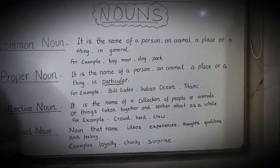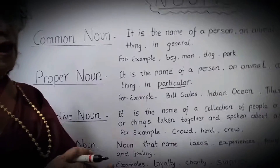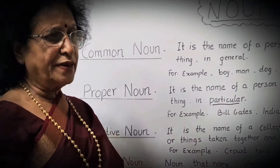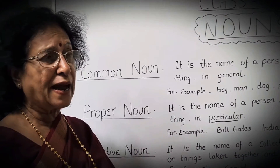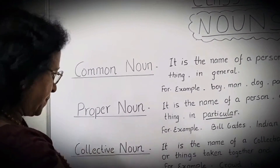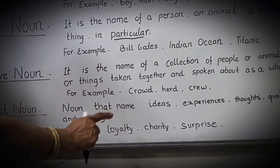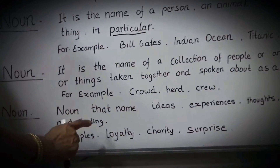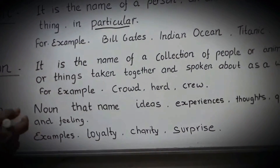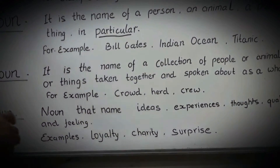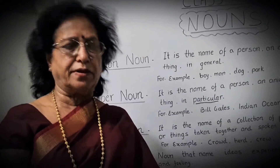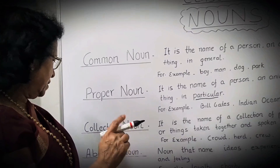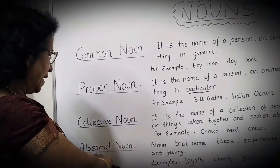The last category is abstract noun. Abstract noun refers to things you can feel but cannot see or touch. Abstract noun covers ideas, experiences, thoughts, qualities, and feelings. For example: loyalty, clarity, surprise — all these are abstract nouns. Now in the second lecture, I will tell you how to form abstract nouns.